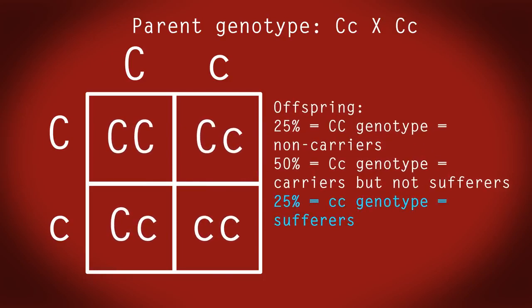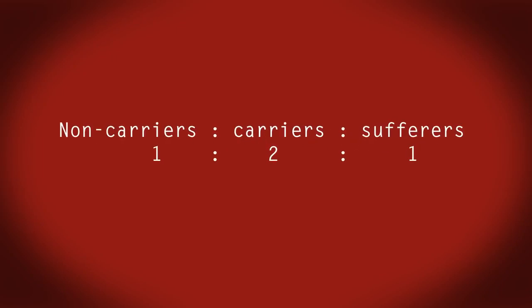So there is a 25% chance that the offspring of two carrier parents will be sufferers of cystic fibrosis. We can represent this in a 1 to 2 to 1 ratio. See how easy Punnett squares are for showing probability of offspring genotypes?